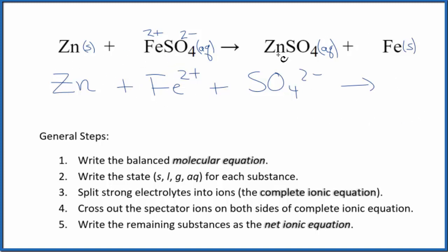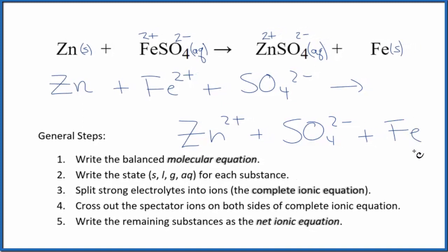In the products, we have our zinc and our sulfate. So we said the sulfate's 2 minus, the zinc, that's 2 plus. We have zinc, Zn2 plus, plus the sulfate ion, SO4, 2 minus. And then the iron, that's a solid, so we just have Fe. So this is the complete ionic equation.